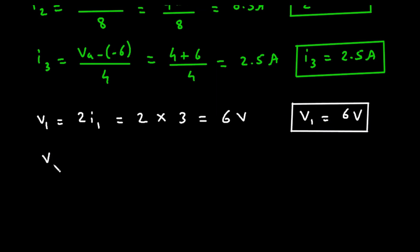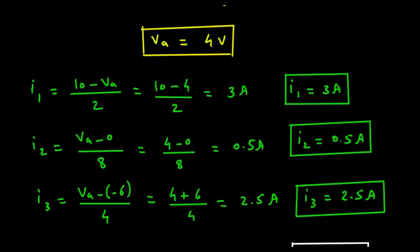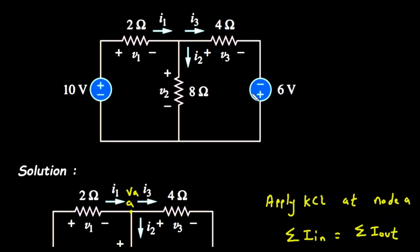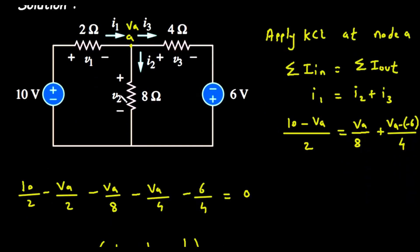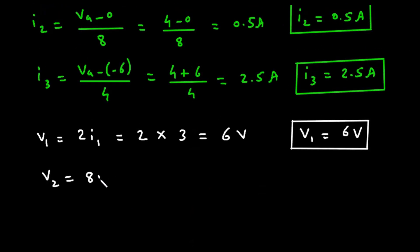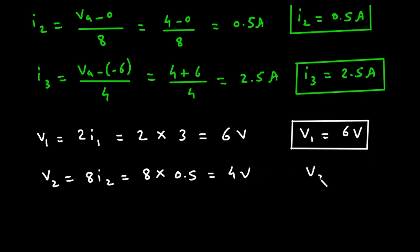Next, V2 = 8 × I2 = 8 × 0.5 = 4 volts. Therefore V2 equals 4 volts.